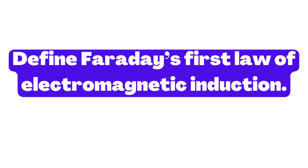Faraday's first law of electromagnetic induction states that the induced electromotive force, EMF, in any closed circuit is equal to the time rate of change of the magnetic flux through the circuit. In other words, the induced EMF is directly proportional to the rate at which the magnetic field strength or flux changes over time.